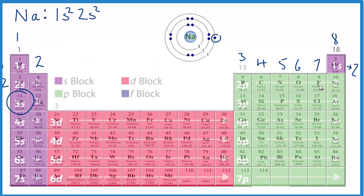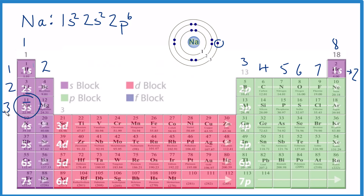Still in the second energy level — 2p1, 2, 3, 4, 5, 6. We've used 10 electrons. Remember we have 11, because the atomic number equals protons and also equals electrons for all these elements. The last thing we do after 2p6 is go back to the third energy level: 3s1. That is the highest energy level, and it ends in s1 — there's that one valence electron.